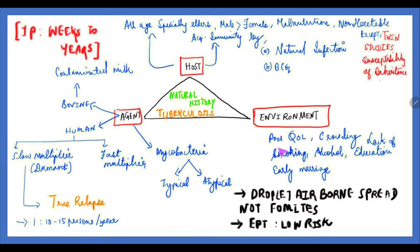The environment contributes through poor quality of life due to overcrowding, since this is an airborne infection. Overcrowding is an important risk factor. Smoking and alcohol again target the lung, so these are important environmental and social risk factors. Droplet infection is the more common route and mode of transmission — not fomites.